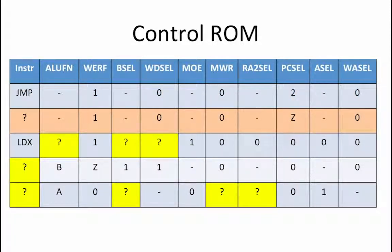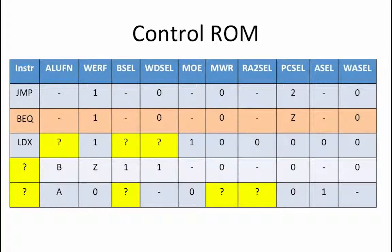Moving on to row 2 of our control ROM, we see that now we have PC cell equal to Z in this row. This suggests that the instruction corresponding to this row is some kind of branch instruction. Of our two branch instructions, the one that branches when Z equals 1 is BEQ, so this row corresponds to a BEQ operation. The rest of the control signals for BEQ look just like the ones for the jump, because the ALU and memory are not used. MWR must be set so we don't write to memory. Like the jump instruction, the branch instructions also store the return address in register RC, so the control signals related to the register file are all the same.